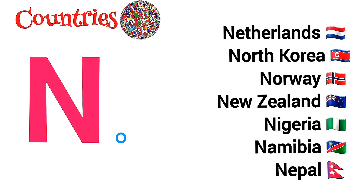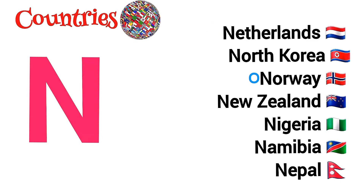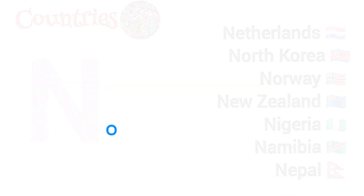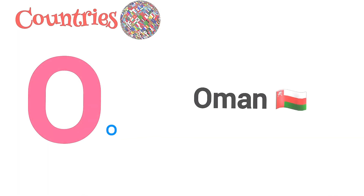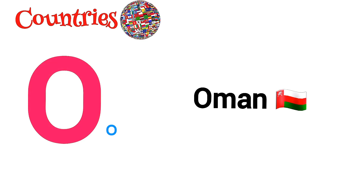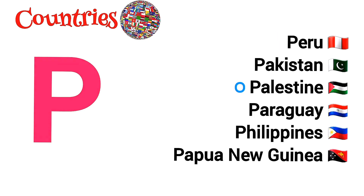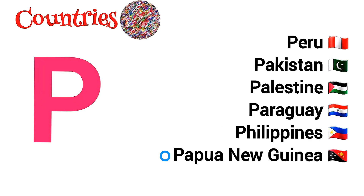N is for Netherlands, North Korea, Norway, New Zealand, Nigeria, Namibia, Nepal. O is for Oman. P is for Peru, Pakistan, Palestine, Paraguay, Philippines, Papua New Guinea.